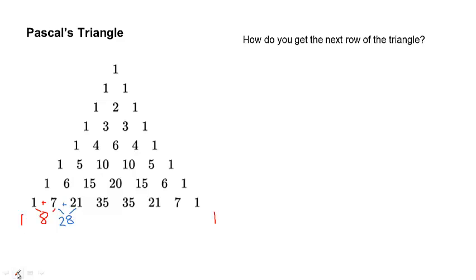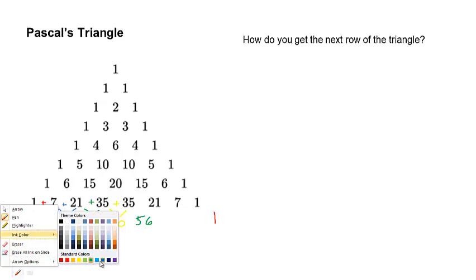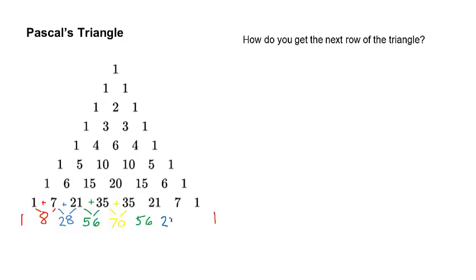So I only have a few more things to do here. 21 plus 35 is 56. 35 plus 35 is 70. And we've hit the halfway point, so now we know this one's going to be 56, the next one's going to be 28, then 8, and then the 1. So it is fairly simple to get the next row.